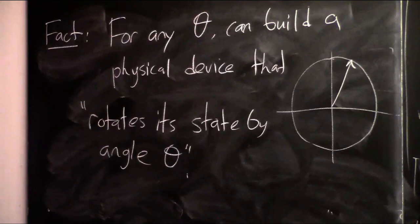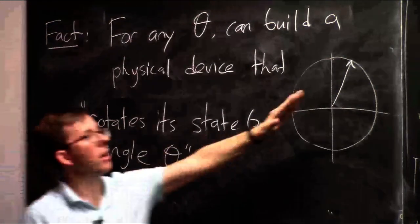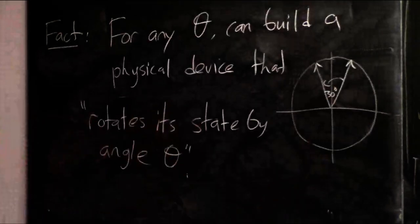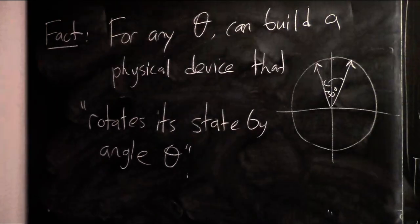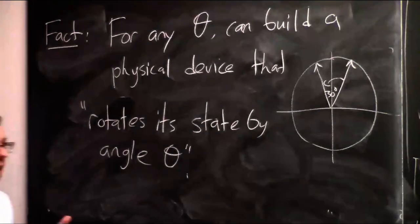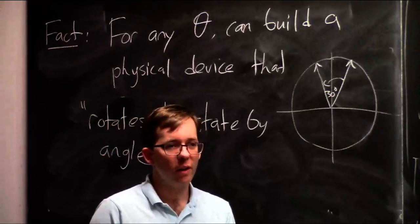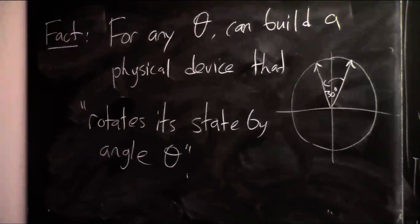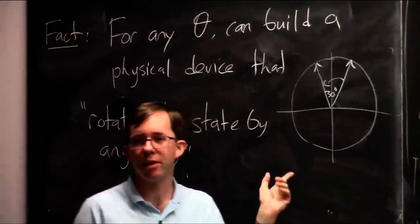You can pick your favorite angle, like 30 degrees, and build a machine which rotates the qubit state by 30 degrees. For any angle between zero and 360 degrees, you can build such a machine. How you physically do it depends on how you're implementing your logical qubit. For example, if you're implementing it with polarization of a photon, you can pass the photon through a slab of quartz where the width of the slab is some function of theta. Or if you're storing your qubit with an ion trap, you fire a laser at the qubit for some amount of time depending on theta.